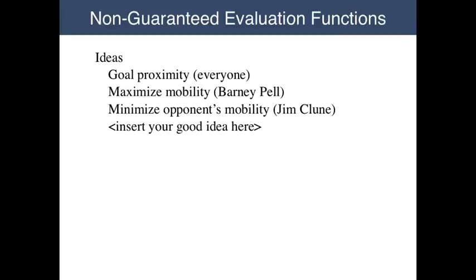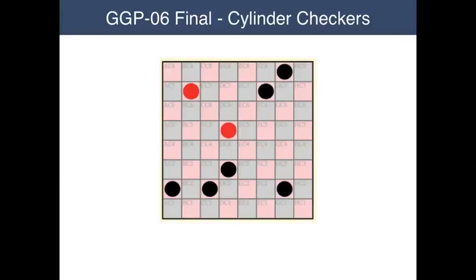Now, all of these heuristics have been shown to be effective in some games. Unfortunately, they are only heuristics — they sometimes fail, and sometimes with comical consequences. The final match of GGP-06 is an example. The game was cylinder checkers — that is, checkers played on a cylinder. The game wraps around vertically.